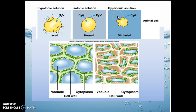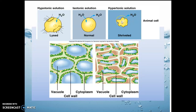The opposite is also true. If you put a cell in really, really salty water, water is going to leave the cell to try to go dilute the ocean, for example. So water will leave — this is an area that is highly concentrated in water compared to salt, and this is an area that is low concentration of water. So from high to low concentration, water leaves, and that cell will shrivel up.